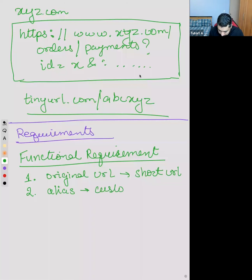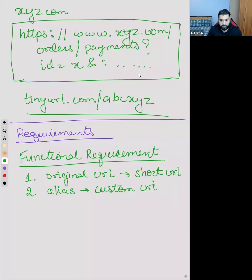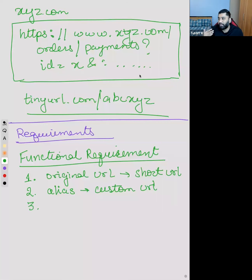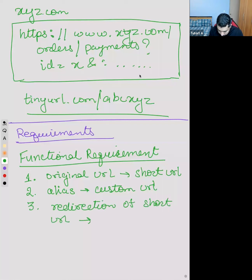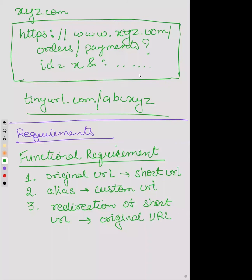The third part - the basic constraint would be that once you get a short URL, that short URL should redirect to the original URL. So I'd say: redirection of short URL to original URL. When you click on the short URL, you are basically redirected to the original URL. While writing this down, you need to write this so that later it would be useful.